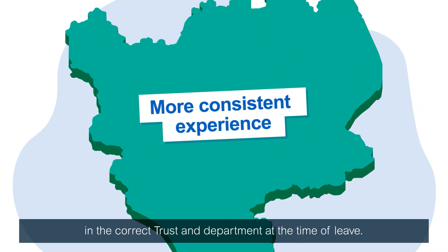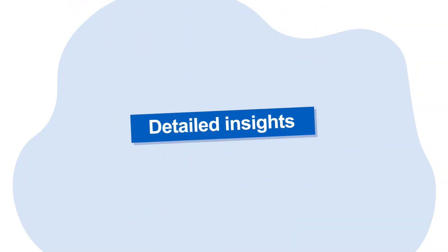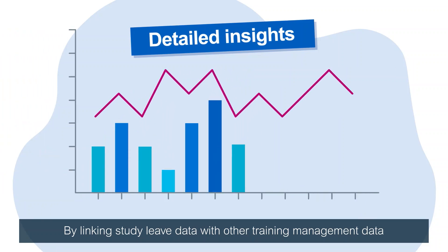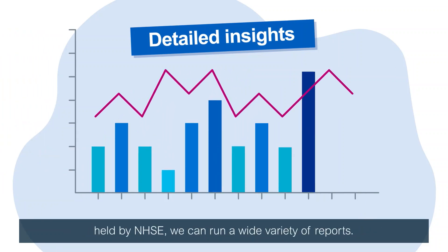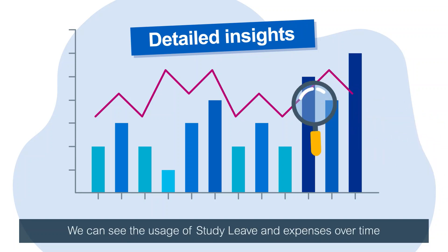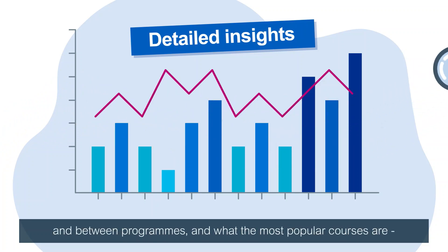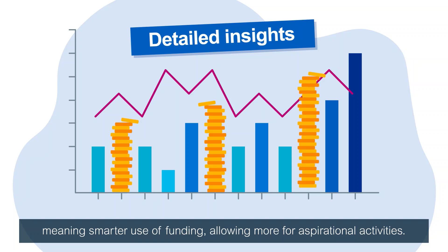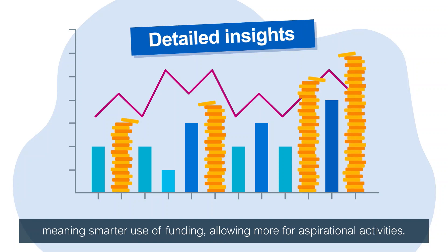Each application is linked to the post, so it will automatically go to the approver in the correct trust and department at the time of leave. By linking study leave data with other training management data held by NHSE, we can run a wide variety of reports. We can see the usage of study leave and expenses over time and between programmes, and what the most popular courses are, meaning smarter use of funding — allowing more for aspirational activities.